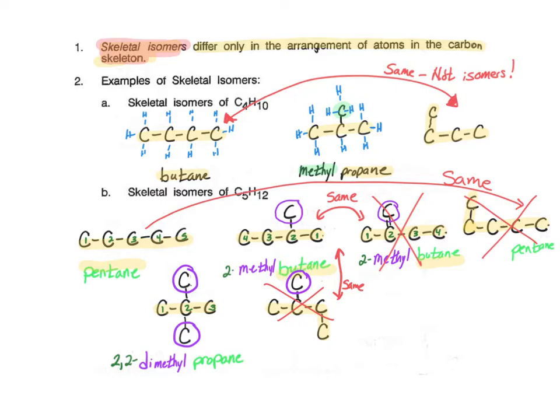Now let's see if there's any others. If I try to put this one off the end and put it on the top, nope, I got 2-methyl butane again. If I try to take it off the end and put it on the bottom, I have 2-methyl butane again. So you can see that we're not coming up with any other structures. And so we are done. We have three skeletal isomers of C5H12.